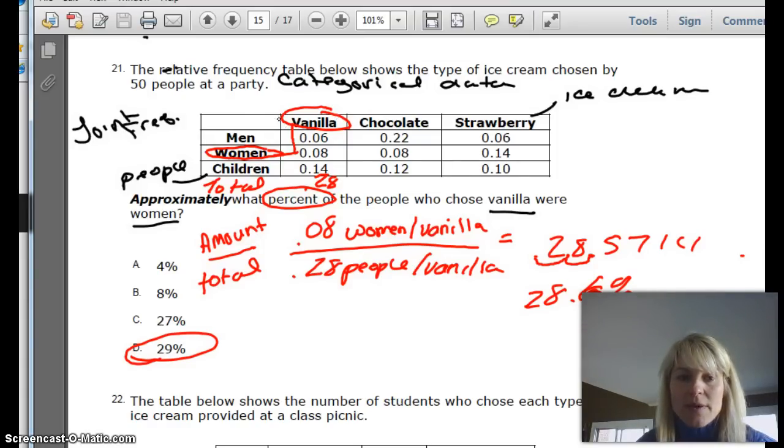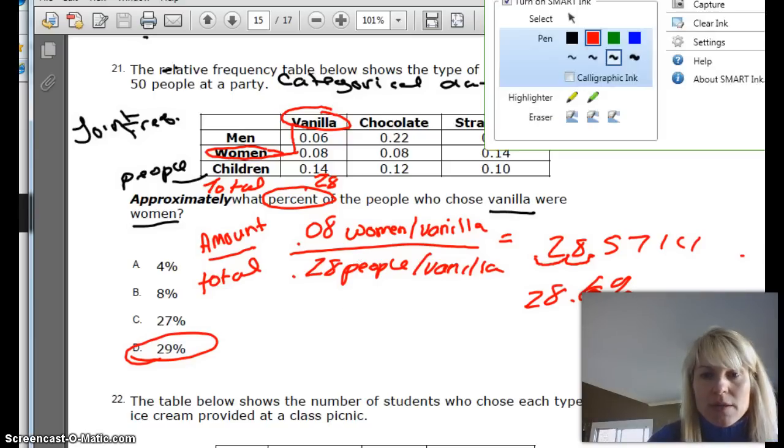So a couple different things. Identify the categories. Figure out the amount over which total that you're talking about. So let's look at another example here.